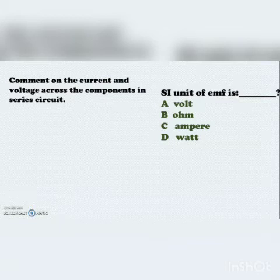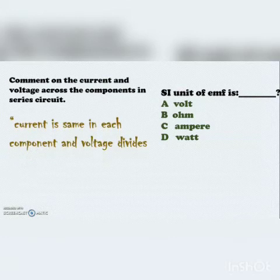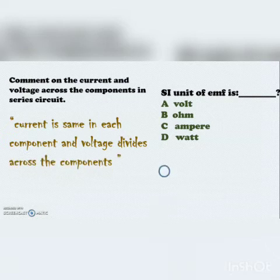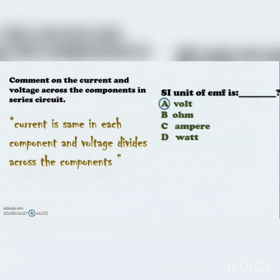Comment on the current and voltage across a component in a series circuit: the current is the same in each component and voltage divides. The SI unit of EMF — options volt, ohm, ampere, or V — the correct option is volt.